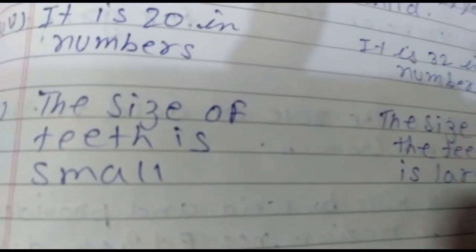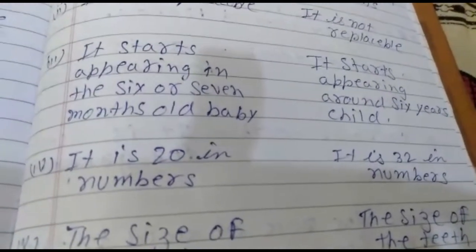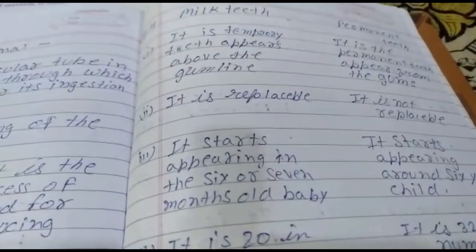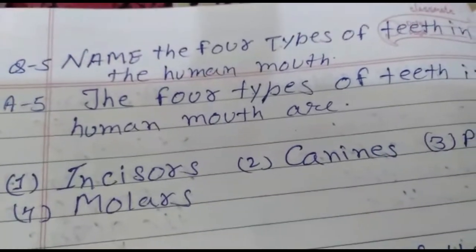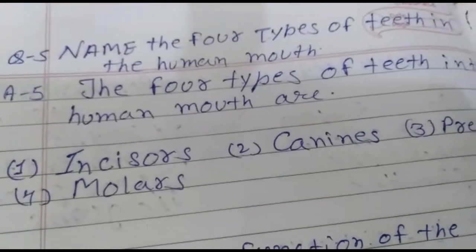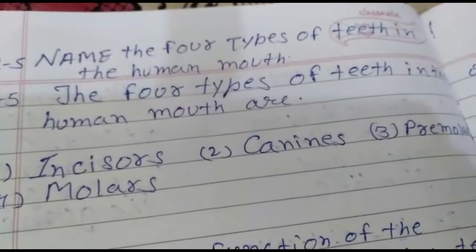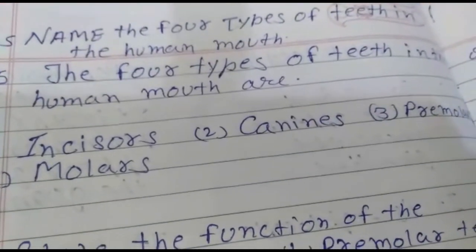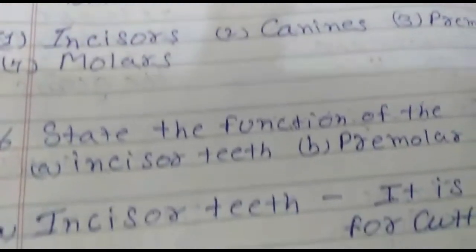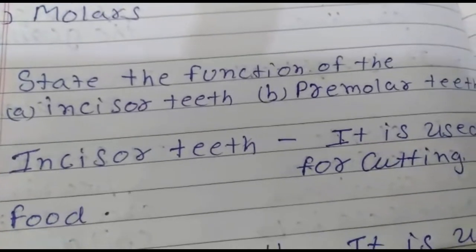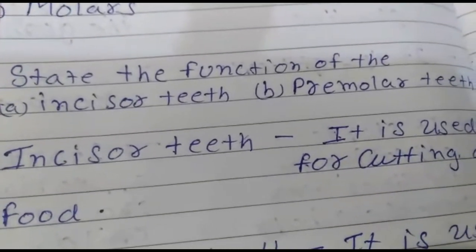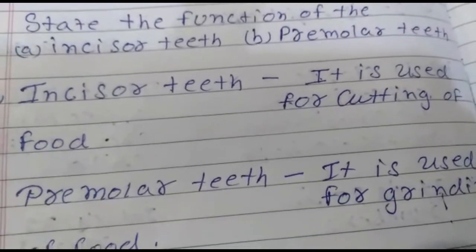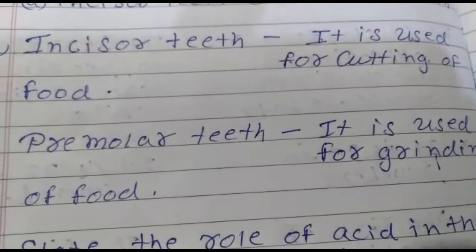You have to write only any two of those differentiating points. Next: name the four types of teeth in the human mouth. The four types are incisor, canine, premolar, and molar. The function of incisors is cutting of food; the function of premolars is grinding of food.